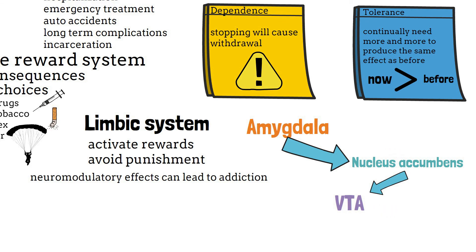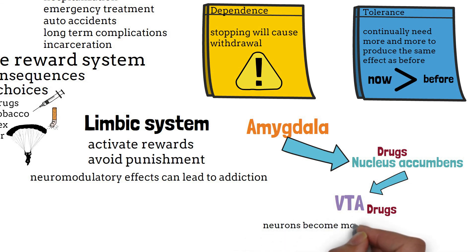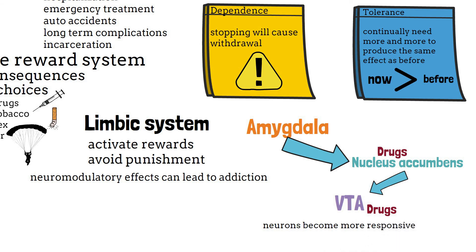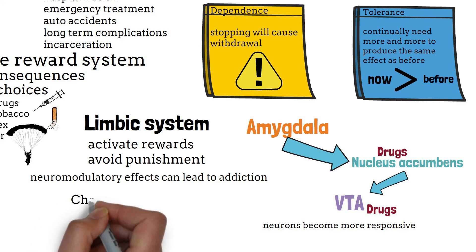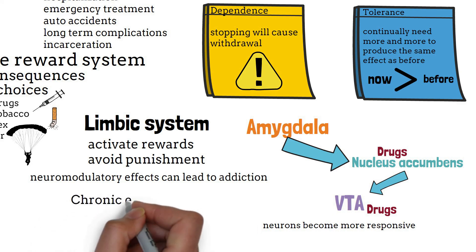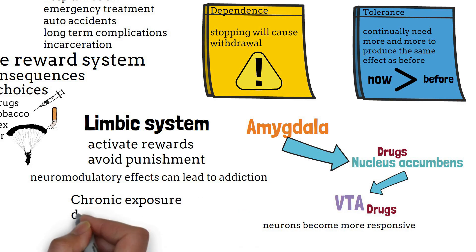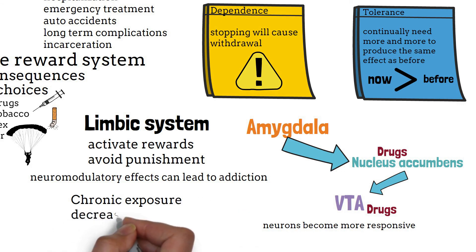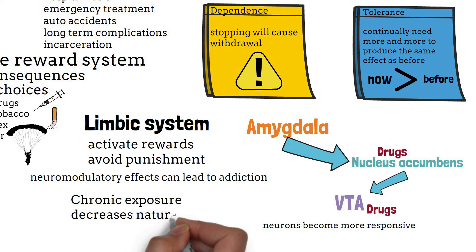Under normal circumstances, the dopamine neurons are phasically active, but with the addition of input from the amygdala and orbital-medial prefrontal cortex, the neurons become more responsive. The activation of this complex of limbic connections is believed to cause the rewarding effects of normal activities, but the phasic release can lead to experience-dependent plasticity, which in turn leads to tolerance. The cellular and molecular adaptations to the limbic circuits with chronic exposure to addictive drugs dampens the response to less potent natural rewards while intensifying the response to addictive drugs.